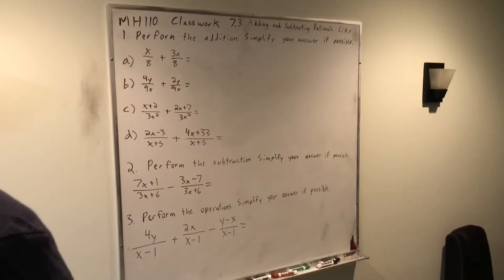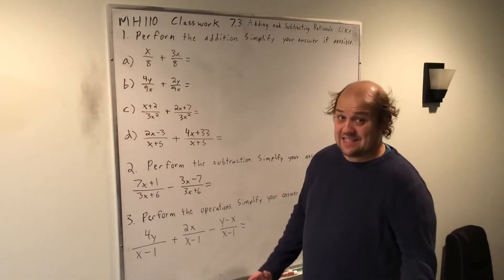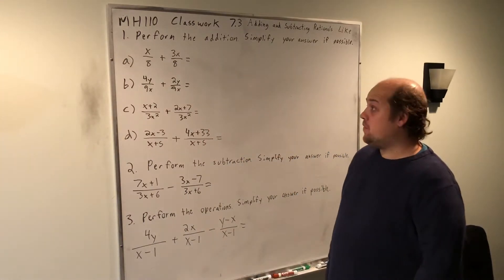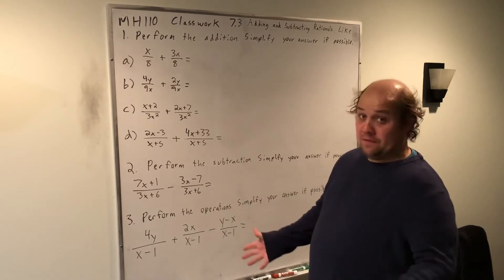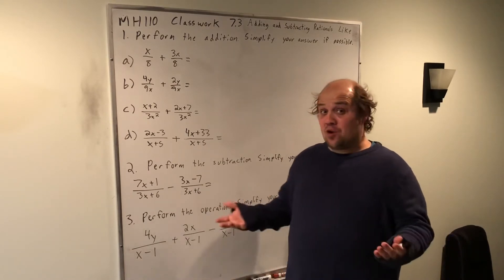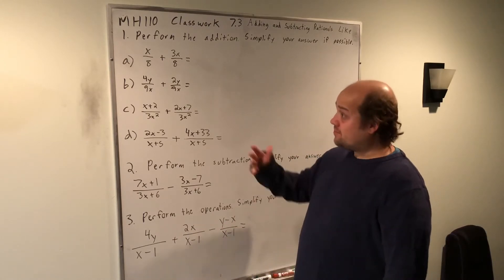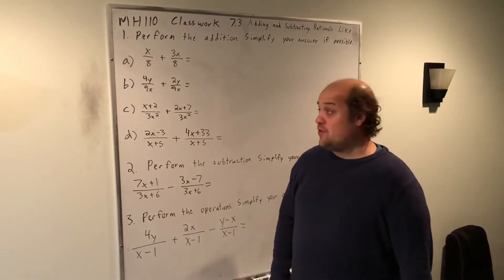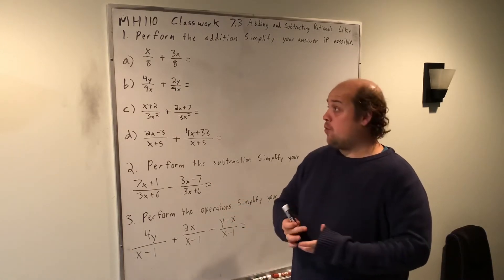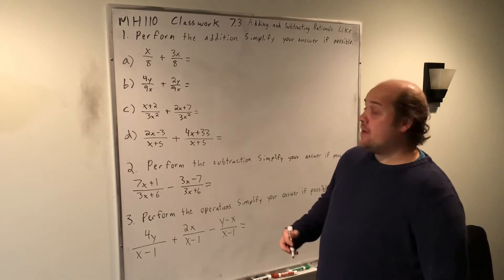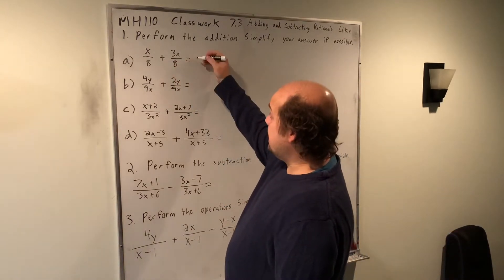Where we begin in this classwork is by adding fractions. All of the work in this first part is going to be dealing with fractions that already have a common denominator, so we don't have to do a lot of work up front to make sure that the bottoms agree before we can combine them. Next week we'll have to do that work, and at the end of this classwork we'll get into how to do that. But for now, all we have to remember is that when we add fractions we keep the bottom the same.